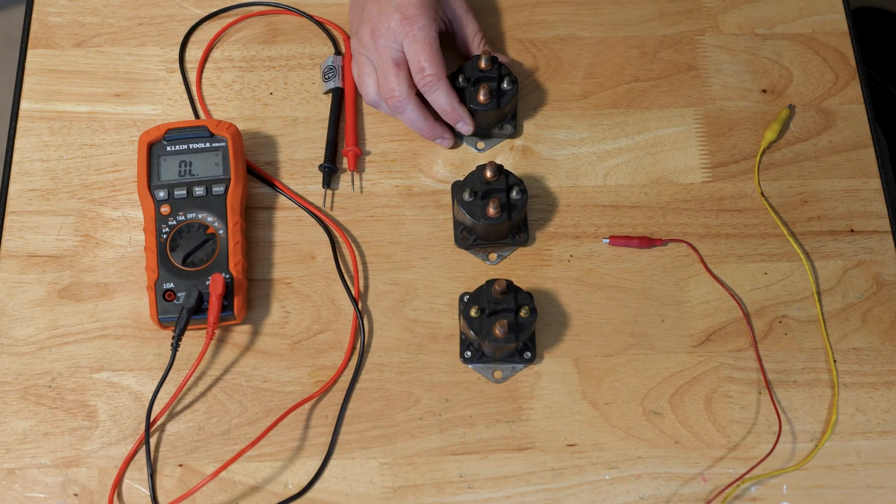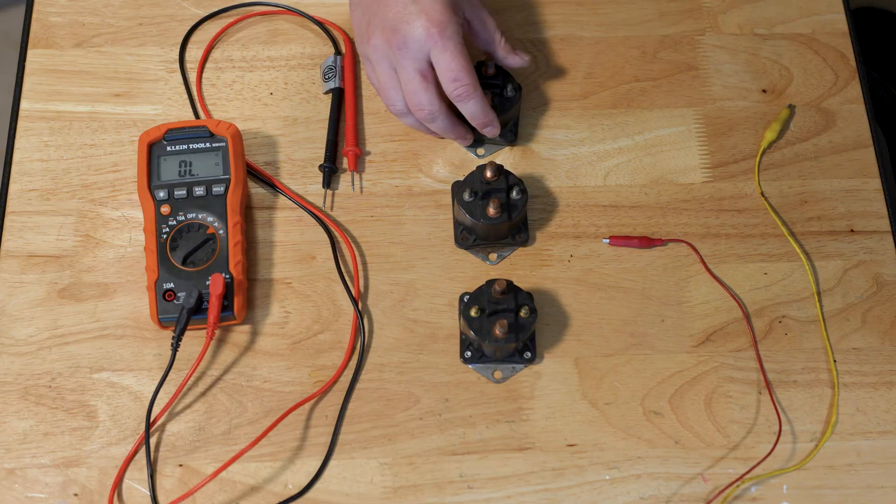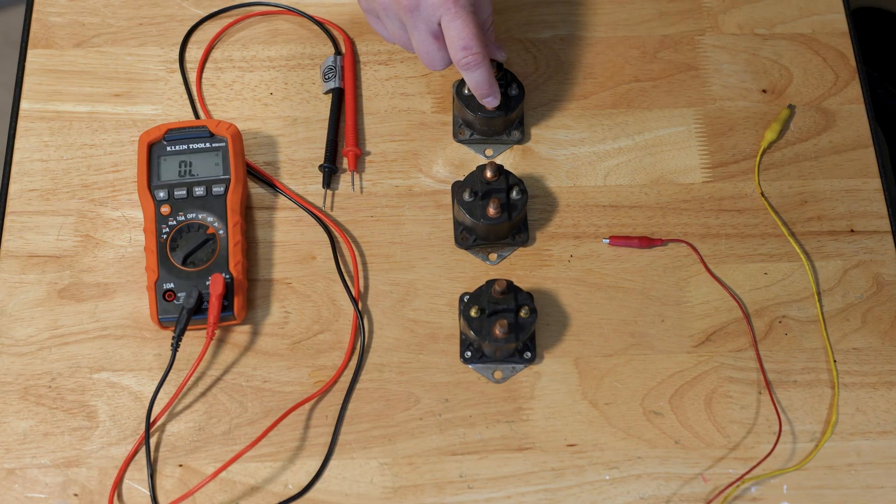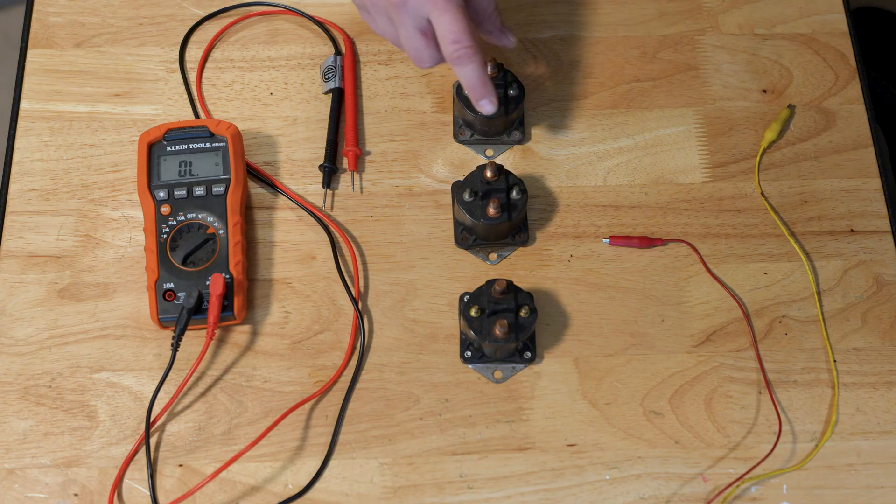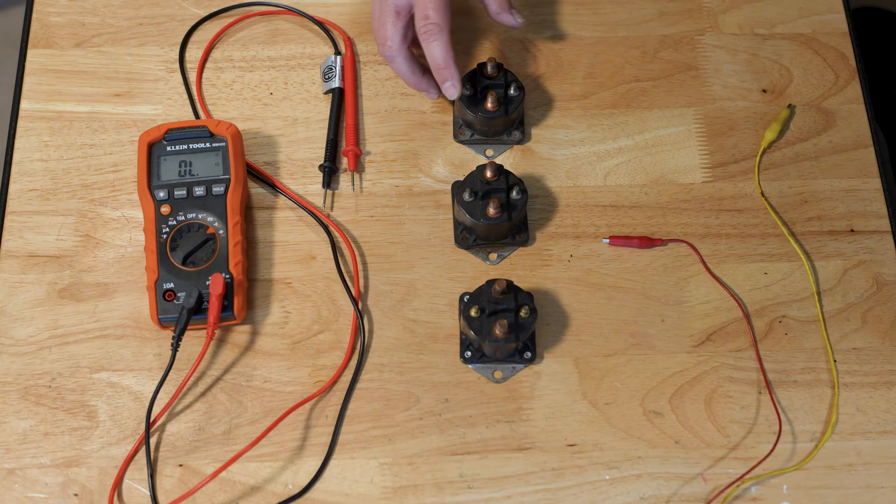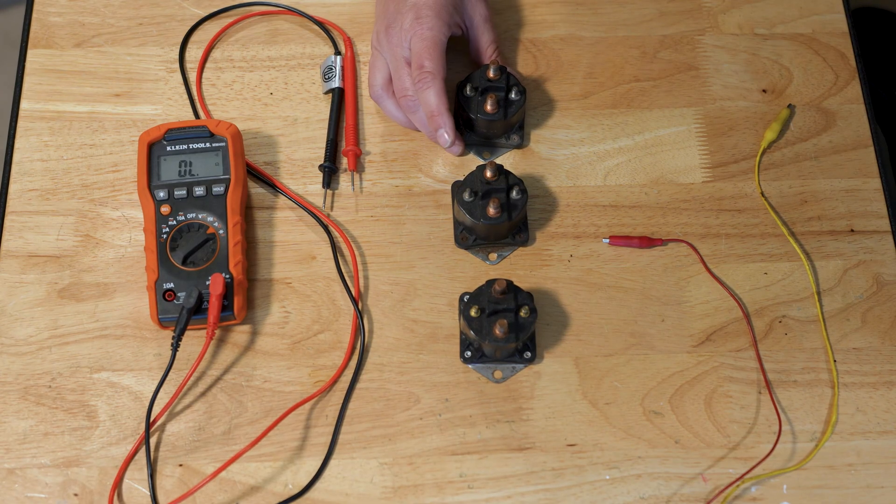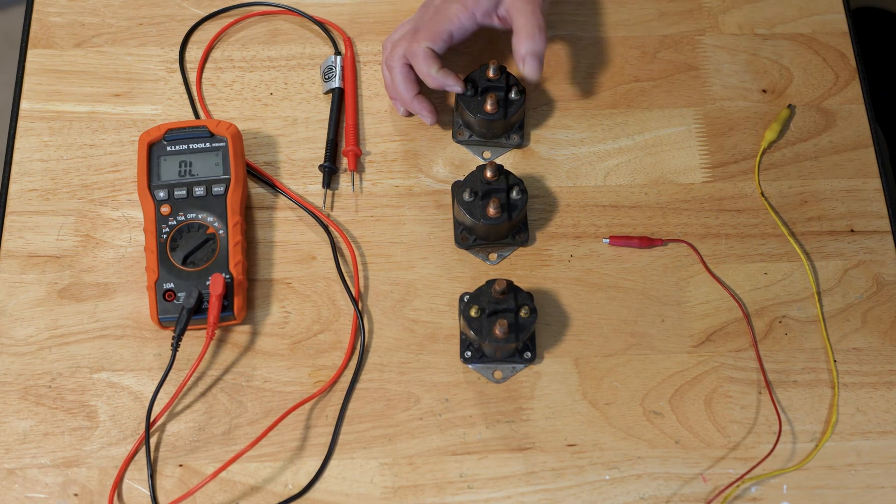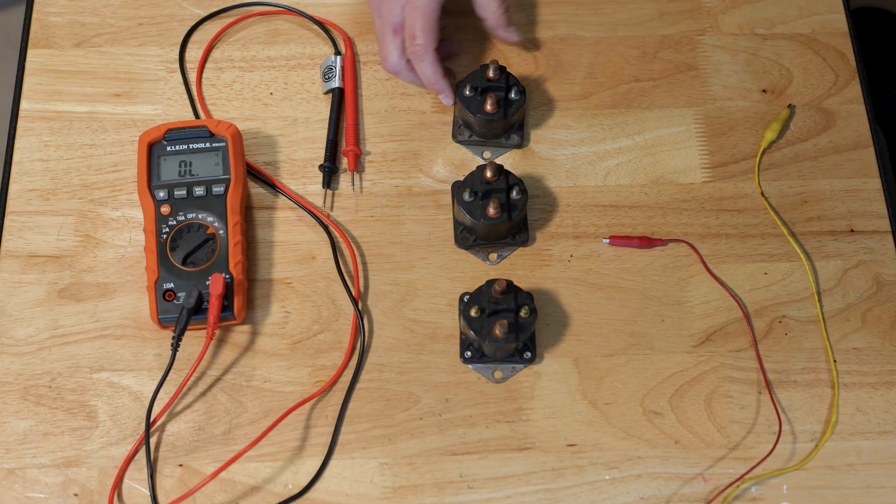We've got three here and I'm going to test them for you or show you how to test them yourself. These heavy lugs conduct the power from the battery to the winch motor, and these small lugs or small terminals here energize the coil to close the contact between the two heavy lugs. So when you energize this, it closes that and then you've got continuity.